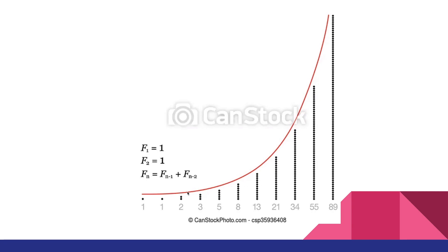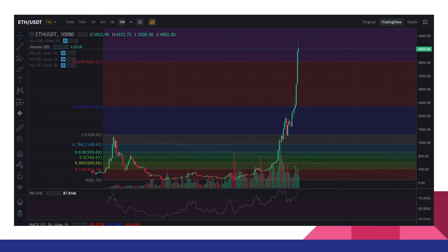Ang parabolic chart is, habang tumatagal, nagiging steep ang ating movement ng prices. So mapapansin nyo ngayon, ganun ang charts ni Fibonacci. So ngayon, bakit ba natin siya ginagamit sa cryptocurrency or sa market ng crypto? It's because the movement — yung parabolic movement niya — is identical to how the crypto market works.